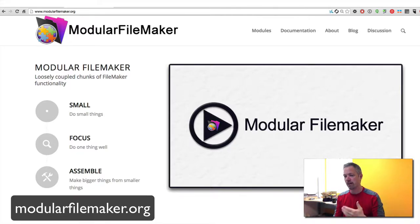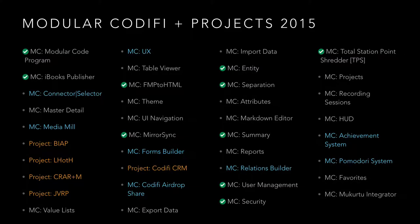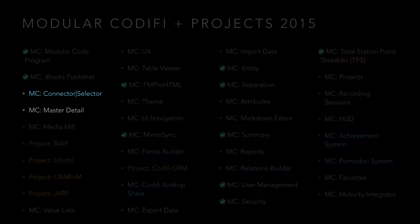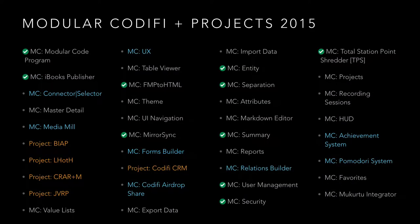We're actually borrowing from all those examples, and our plan is to contribute back a lot of things to the project. What you're seeing here is a combination of things like Connector Selector and Master Detail, which are Modular FileMaker releases, and then things we are building. Everything you see at the green checkmark is something we've either completely finished or is very close to done.